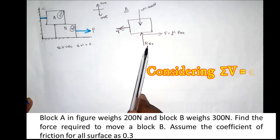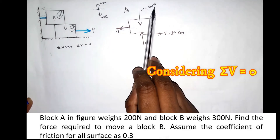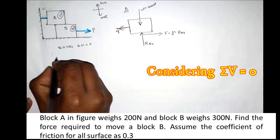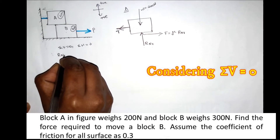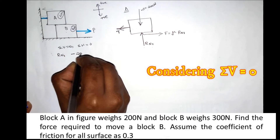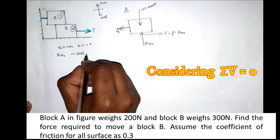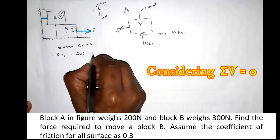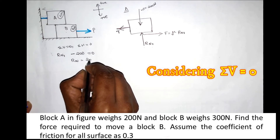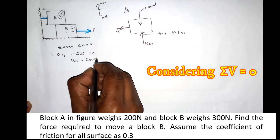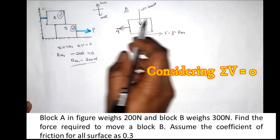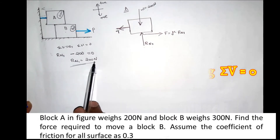In the vertical direction, Rn1 acts upward (positive) and weight of 200N acts downward (negative). Applying Sigma V equals 0: Rn1 minus 200 equals 0, therefore Rn1 equals 200N.